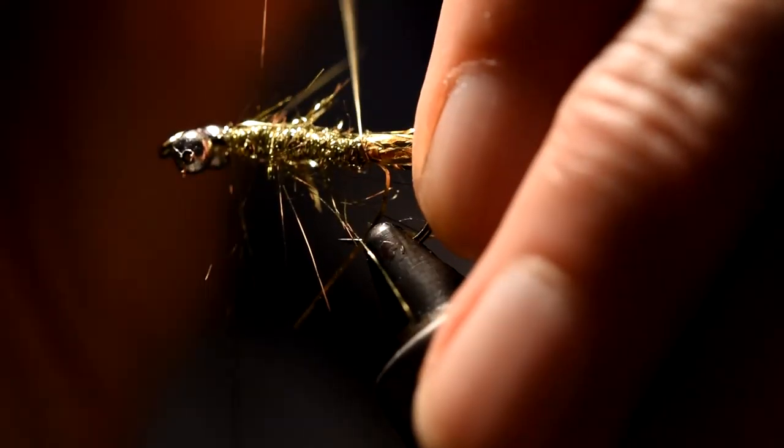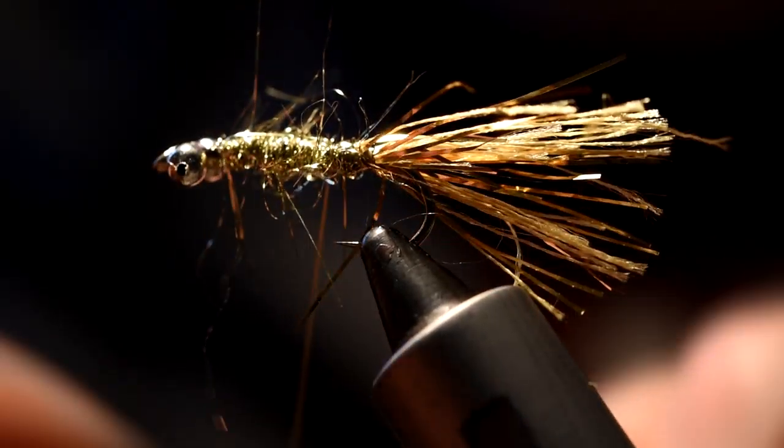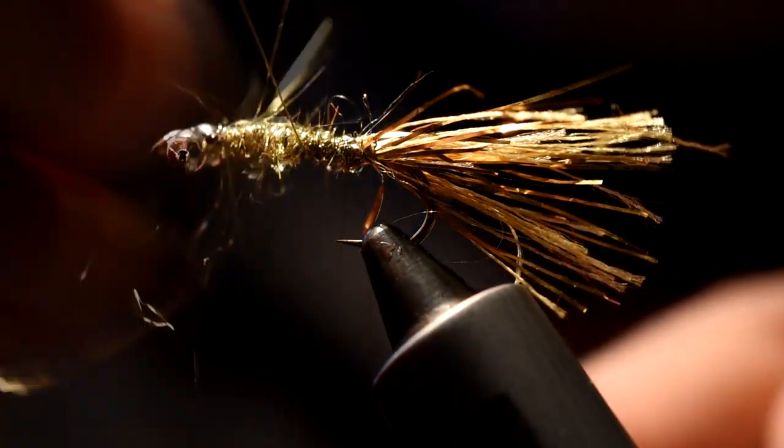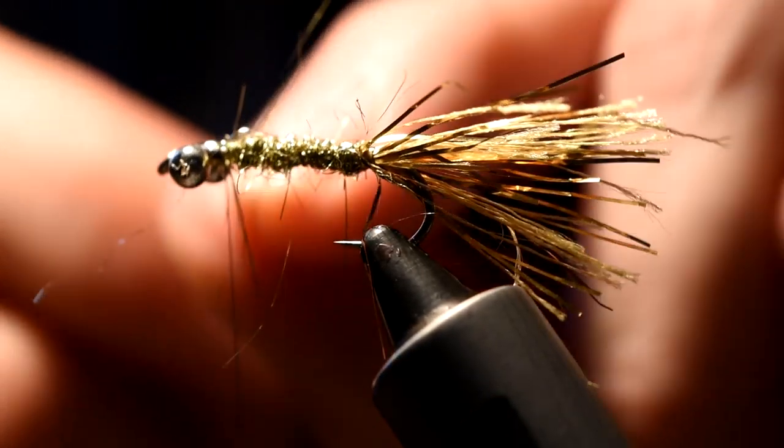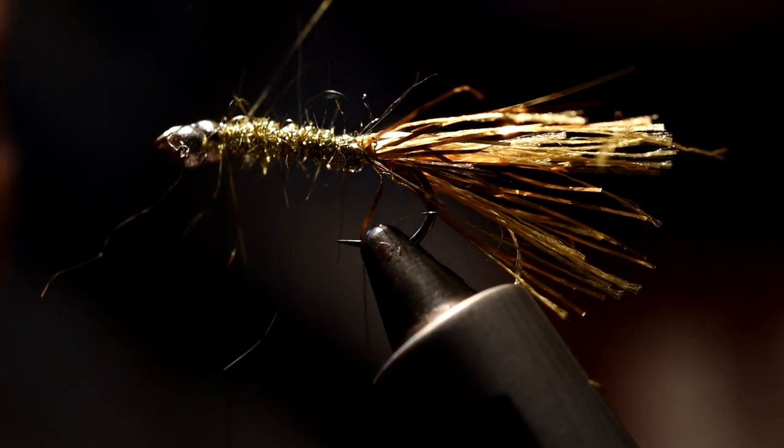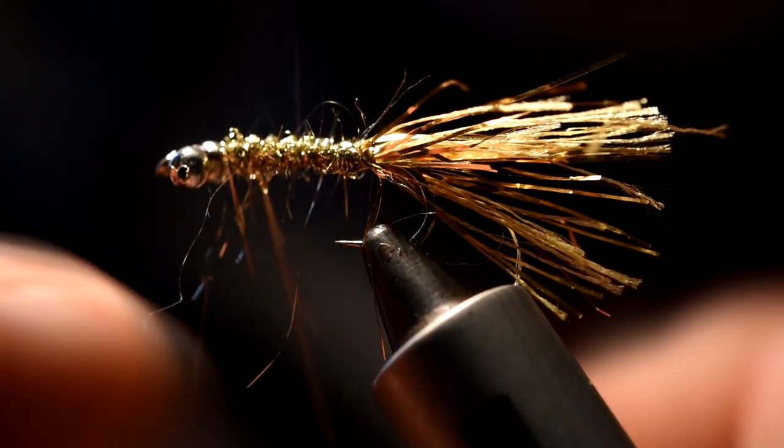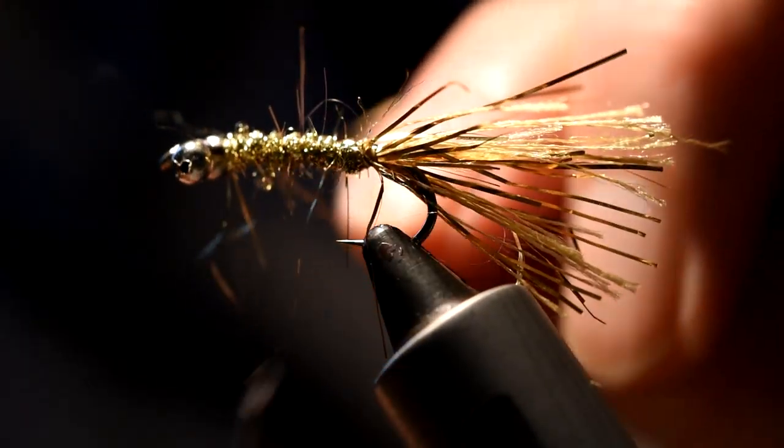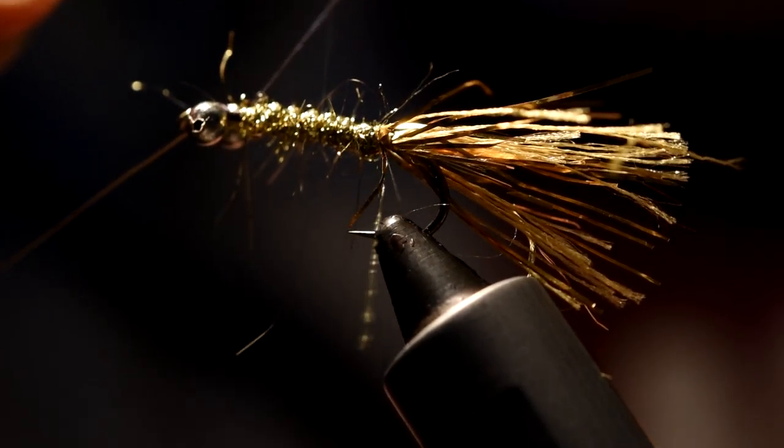And then get your wire and wrap in the opposite direction. Fairly open turns, six or seven wraps is probably about right on a fly this size. Just to hold it all in place and protect it against those nasty aggressive rainbow trout. And actually I suspect this would be a good river fly as well. I think the brownies would go for this. It's not too big, it's gold. I think things go for colors the same as themselves, and they think it's wee fry or something like that.